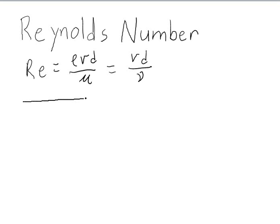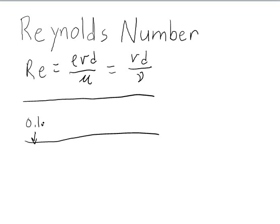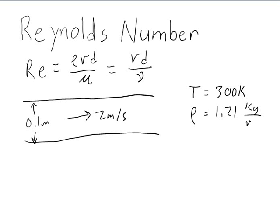So, for an example, let's say we have a tube that is 0.1 meters in diameter. We have a flow going in it that's 2 meters per second, and the temperature of the fluid is equal to 300 Kelvin. Let's call it air, and the density is equal to 1.21 kilograms per meter cubed.